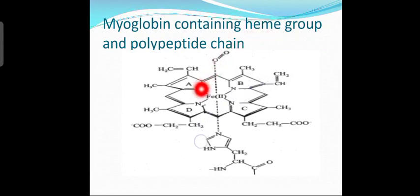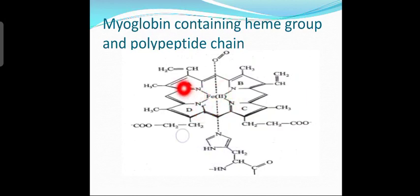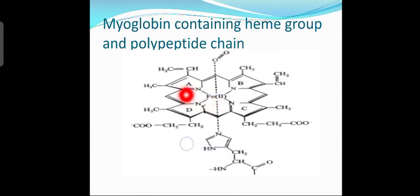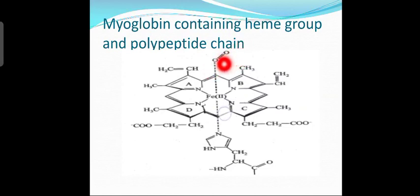The schematic representation of myoglobin shows the heme group and polypeptide chain. There are four porphyrin rings labeled A, B, C, and D, connected by methane bridges (CH=, CH3). Four coordinated sites are present around the iron(2+) atom. The nitrogen atoms form coordinate bonds with iron, while iron is also bonded to an oxygen molecule on one side and a long histidine (polypeptide) chain on the other.